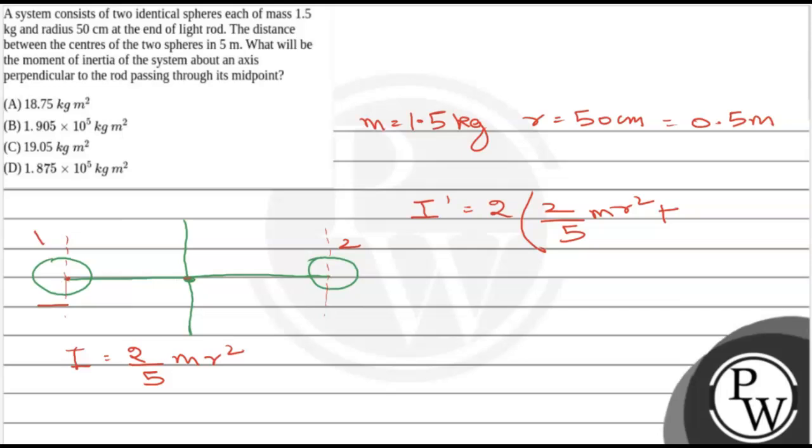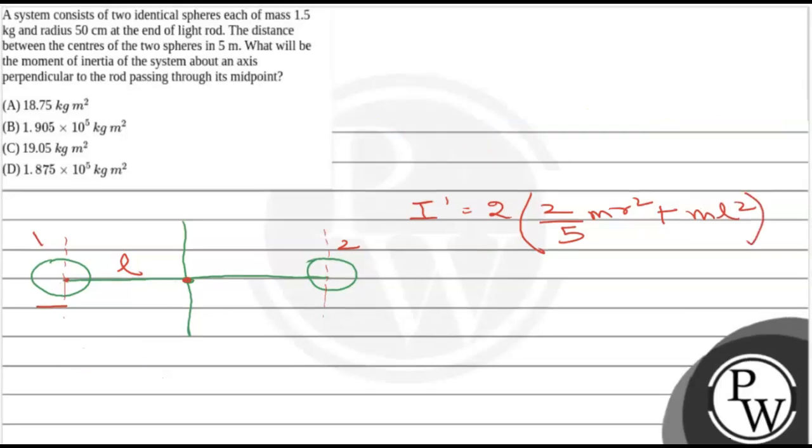let's say the distance from here to here is l. So it will be m l square. The length of the entire rod is given as 5 m, so l will be 5 by 2 m, which is 2.5. So the complete expression will be 2 times